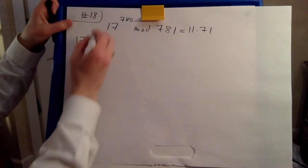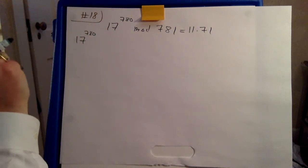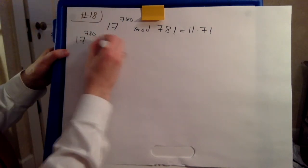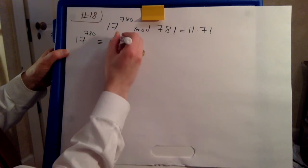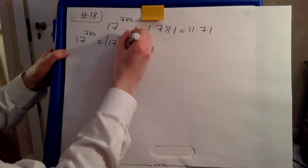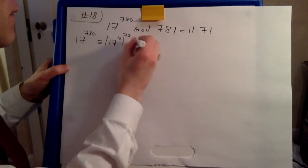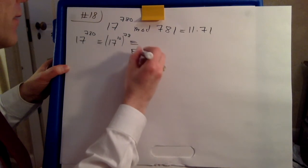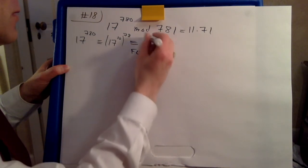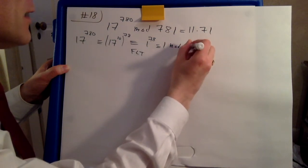So 17 to 780. And now I'm going to do mod 11 first. Well, this is 17 to the power of 10 to the power of 78. But now, by Fermat's Little Theorem, by FLT, we know this is 1 to 78. This is 1. And everything here is mod 11. So we know this mod 11.